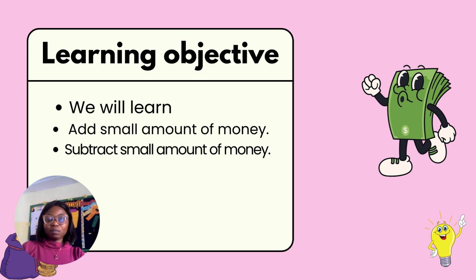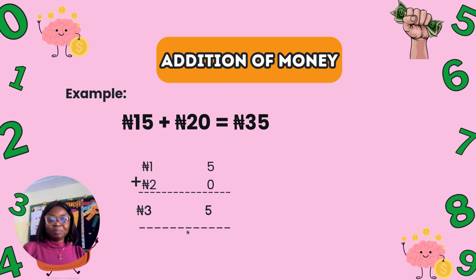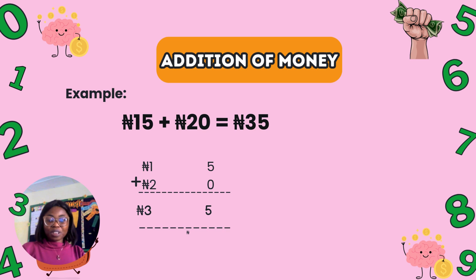Moving forward to addition of money. As you can see the example on the screen: 15 naira plus 20 naira is equals to 35 naira.